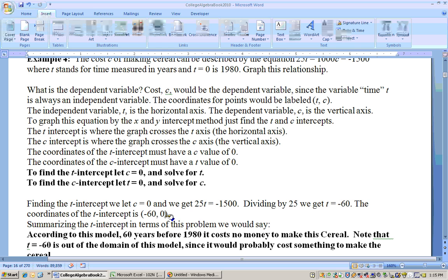That probably doesn't make sense because it would have cost something to make this cereal, even clear back in 1920. But still, that is the answer to the problem, and that would be the sentence that summarizes what the X intercept means.